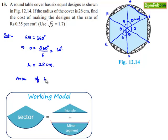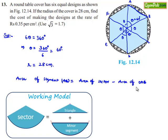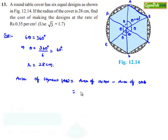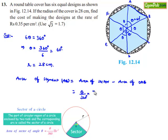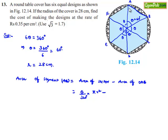Here, AB is the chord that subtends angle 60 degrees at the center, and the designed part AB will be a segment. Therefore, the area of segment AB can be obtained by subtracting the area of triangle OAB from the area of sector OAB, which equals (theta / 360) × pi × R² minus the area of triangle OAB. Since the angle at O is 60 degrees, triangle OAB is an equilateral triangle.